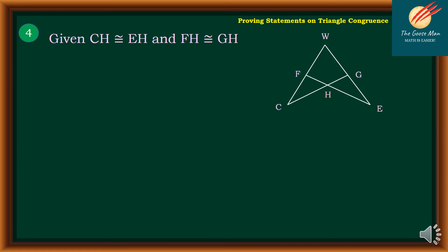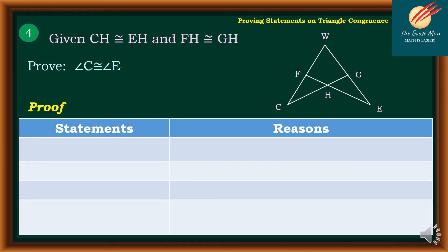Let's move on to example number four. Given: CH is congruent to EH, and FH is congruent to GH. We need to prove that angle C is congruent to angle E. For our two-column proof, statement one: CH is congruent to EH, and FH is congruent to GH — let's mark those line segments — reason: given.